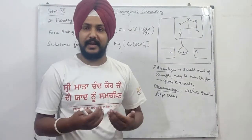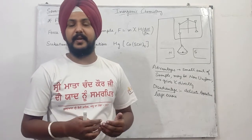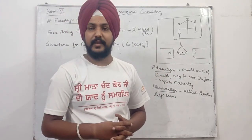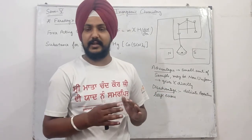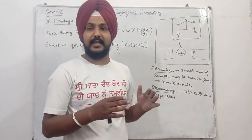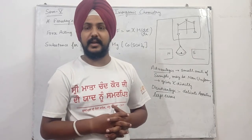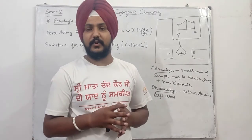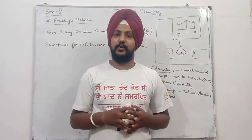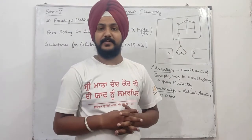Faraday method का apparatus पहले देख लेते हैं - इसके अंदर क्या setup रहेगा। इसके बाद हम देखेंगे कि कैसे working करनी है और कैसे susceptibility की value calculate कर सकते हैं। यहां पे भी हमें दो strong electromagnets चाहिए होती हैं। Small amount of paramagnetic substance को quartz ampoule - glass के शीशे पर रखते हैं, उसे suspend करते हैं और एक sensitive weighing balance machine के साथ attach करते हैं।